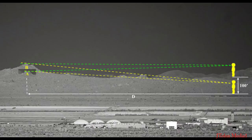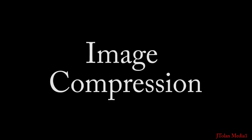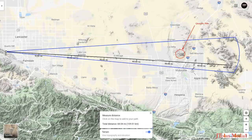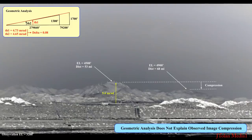So when we do the calculation, we realize that something else is going on. To understand image compression, have a look at this analysis. Notice there's two mountain peaks: the Quarzite in the center at an elevation of 4,500 feet, and a mountain to the right about 4,900 feet at a distance of 68 miles — so it's farther back than the Quarzite mountain.